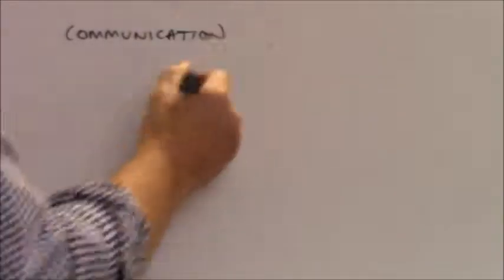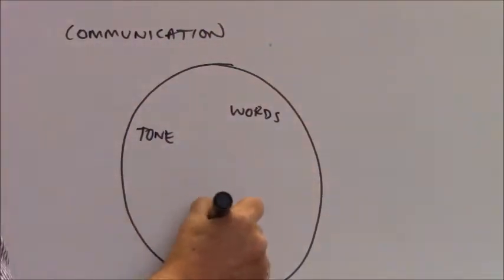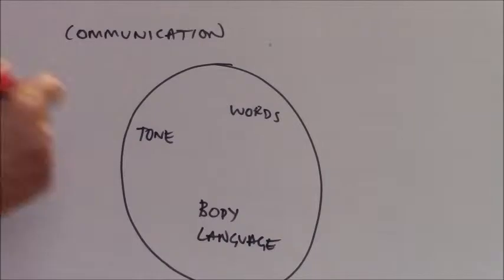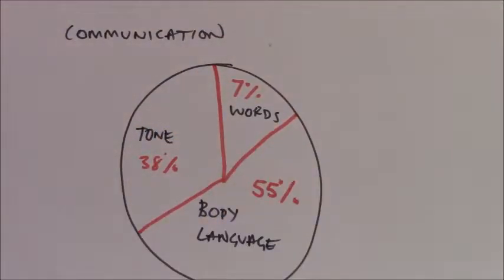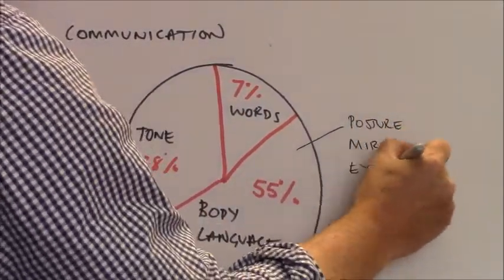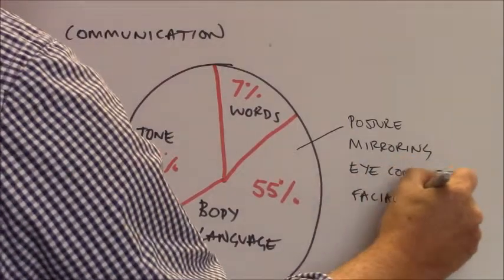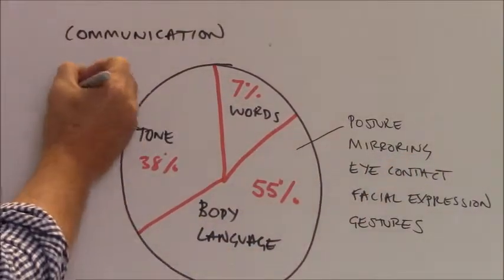When you break communication down into constituent parts, it's fairly alarming just what takes the most significance. Words make up just 7%. Tone of voice, 38%. Body language, a massive 55% of all communication. And by that we're thinking about posture, mirroring, eye contact, your facial expressions, gestures.